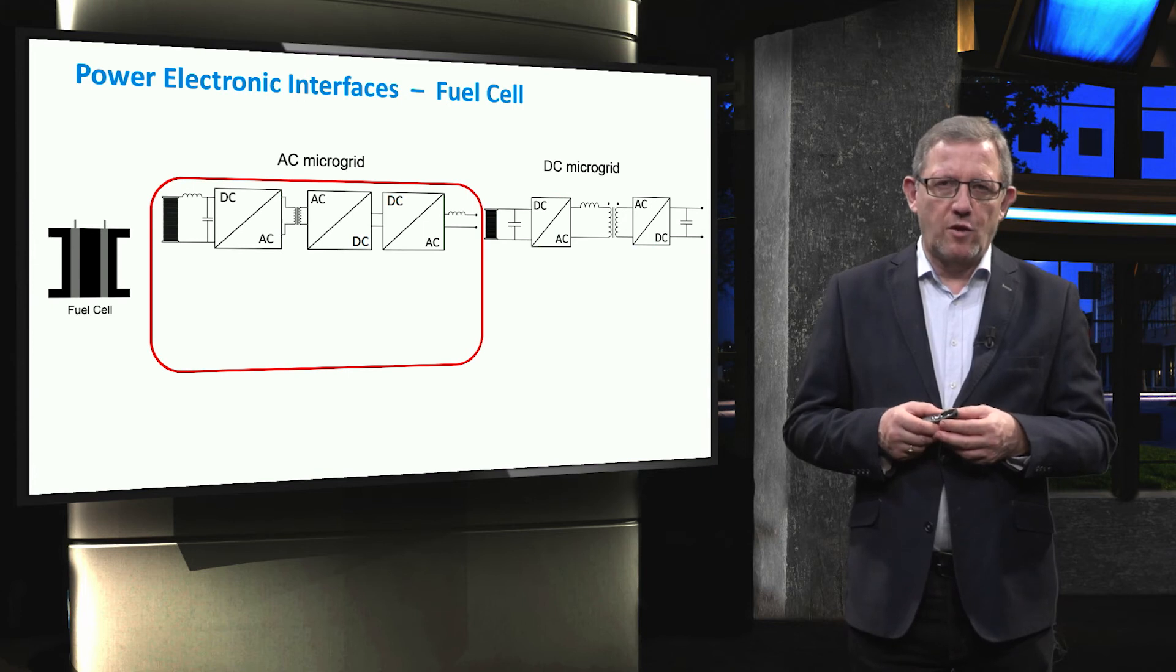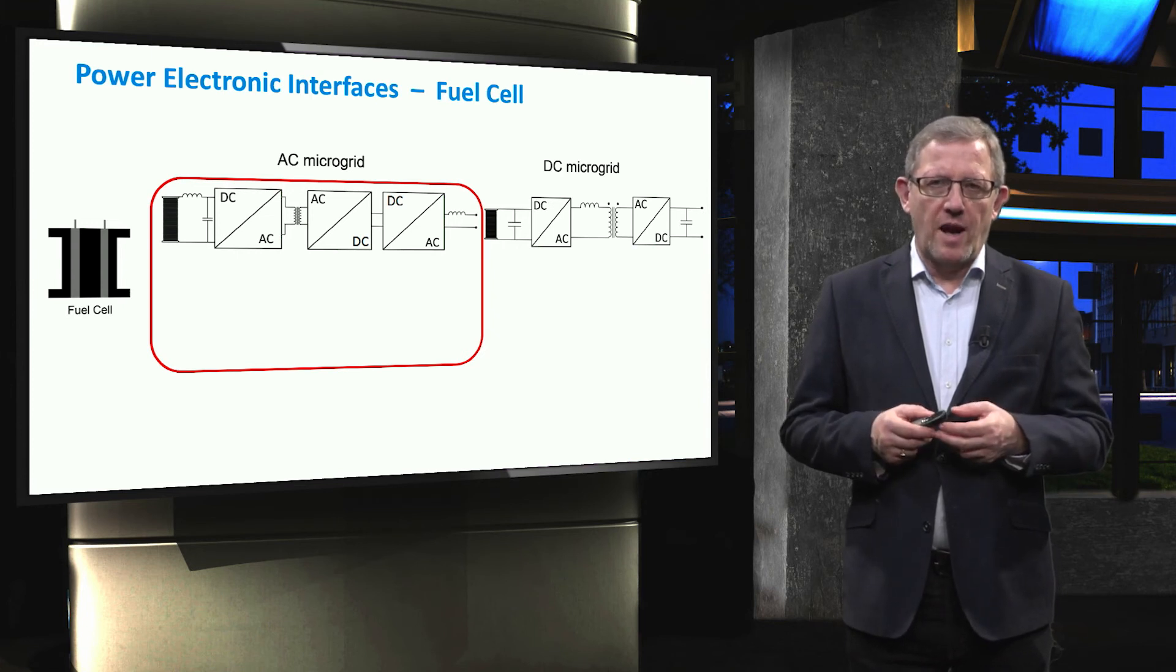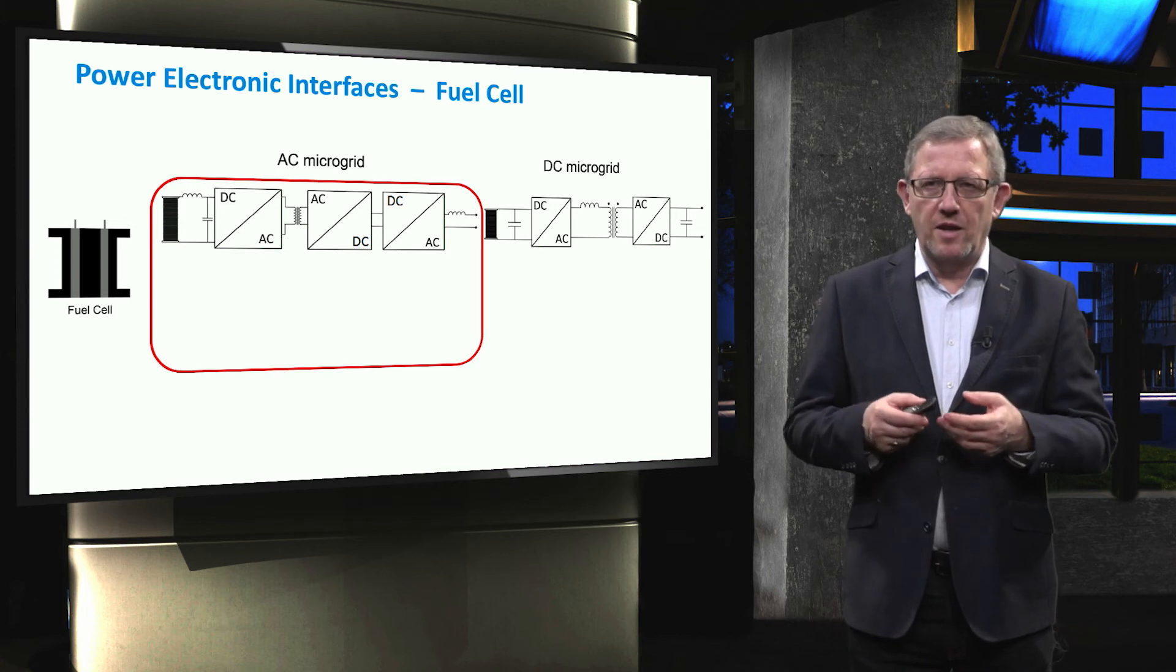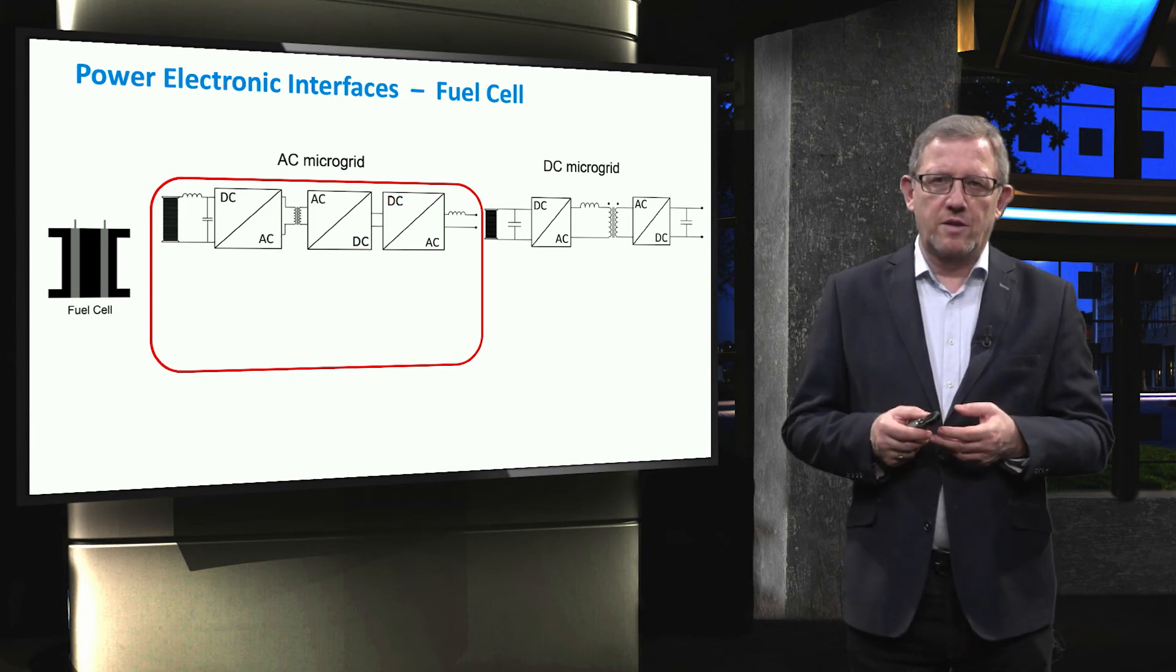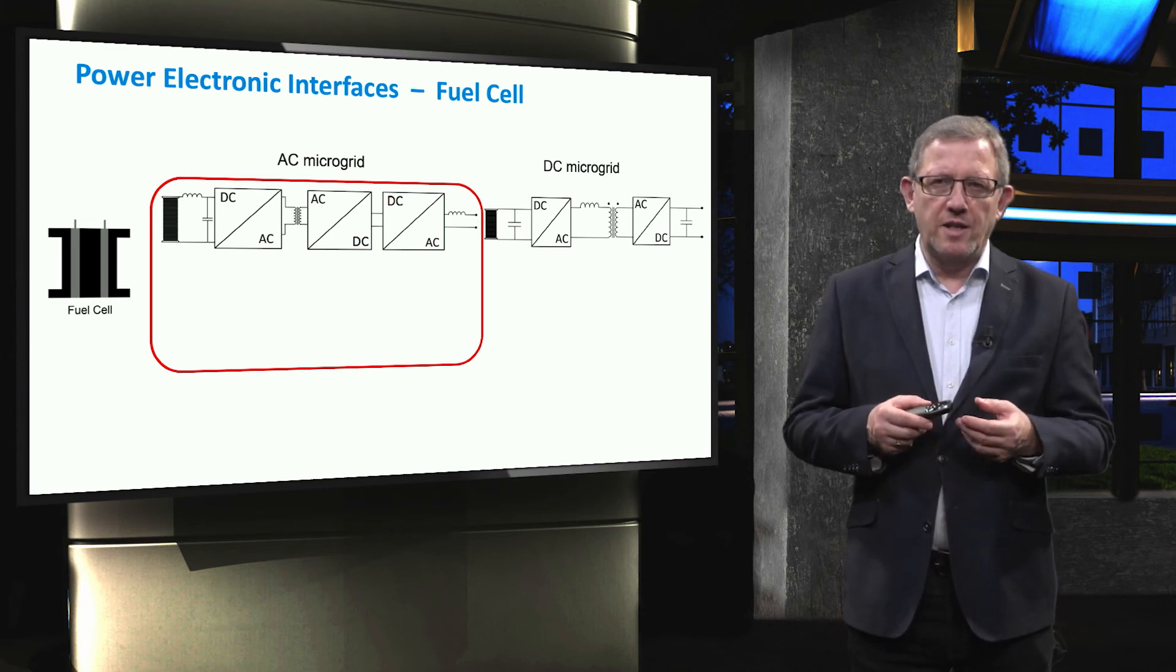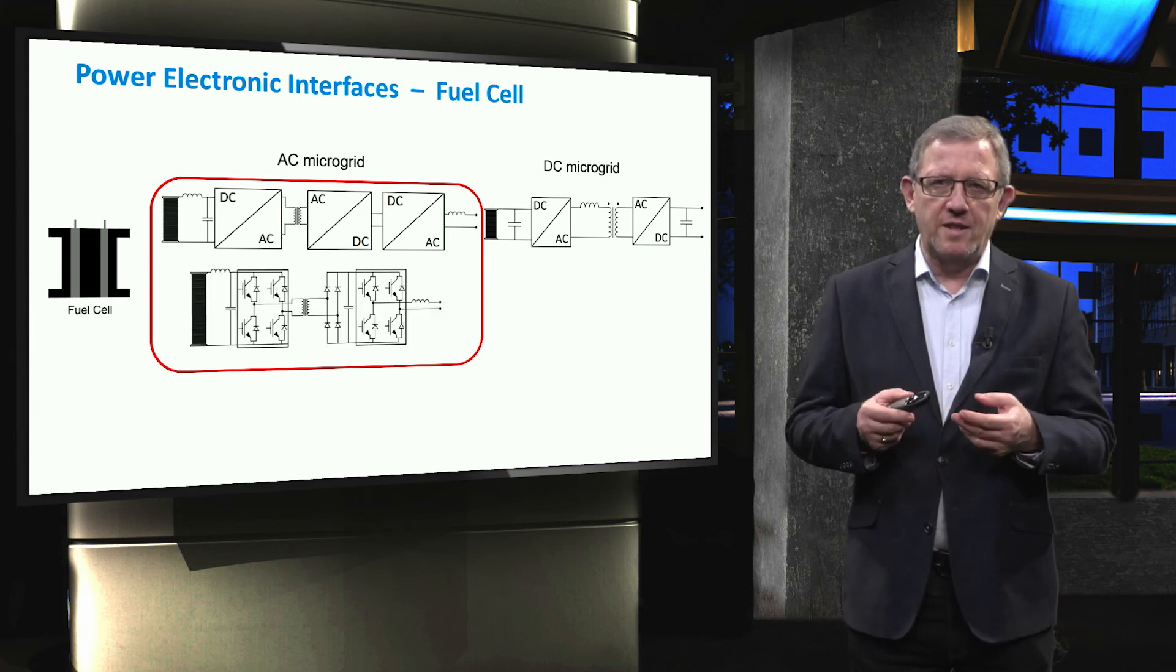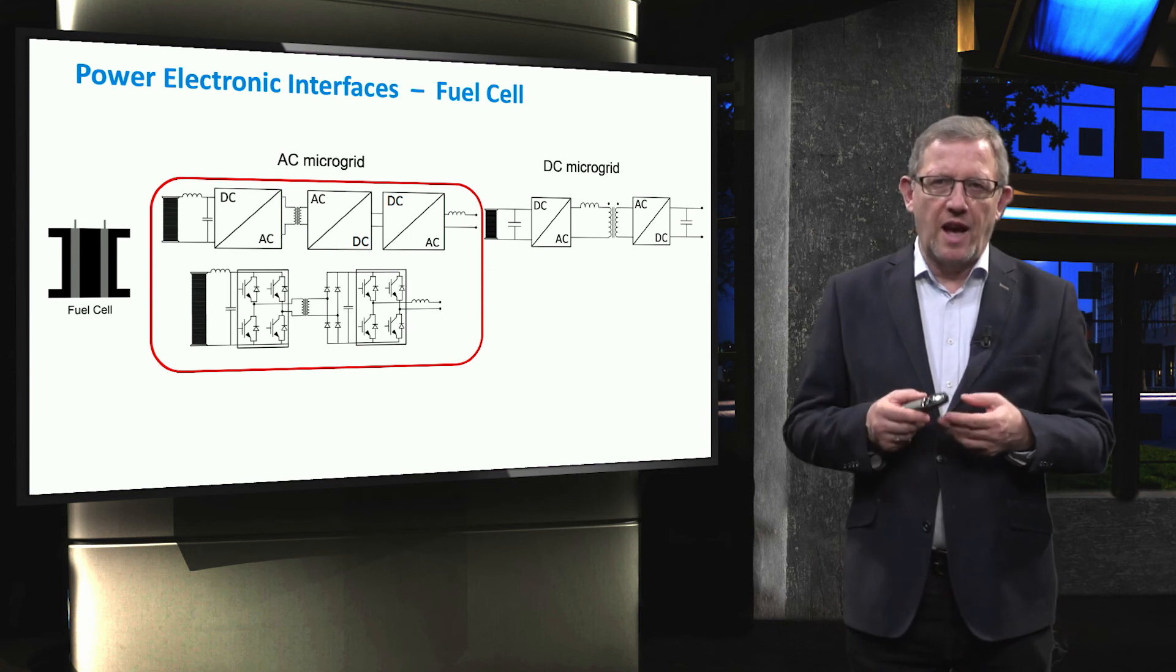The last storage technology for which we introduce the power electronic interfaces is a fuel cell. To connect a fuel cell to AC microgrid, in the simplest form a DC to AC converter can be used. However, to efficiently achieve higher voltage levels, it is possible to increase the number of conversion stages and install a high frequency transformer between the two-leg DC to AC inverter and the diode bridge.